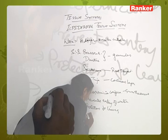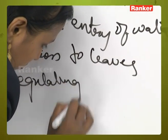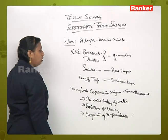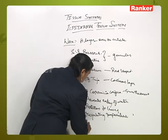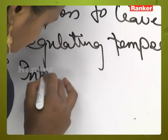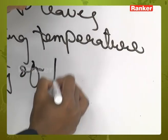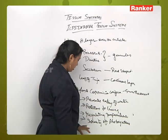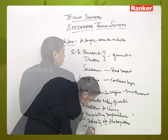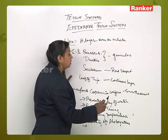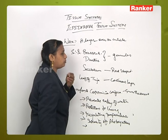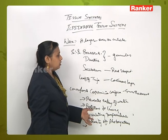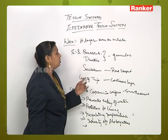It helps in regulating the temperature and is also helpful in controlling the intensity of photosynthesis. It helps in protecting the leaves from excess sunlight. It controls the intensity of photosynthesis by reflecting light onto the leaves and protects the plants from excess sunlight. These are the functions of the wax layer.